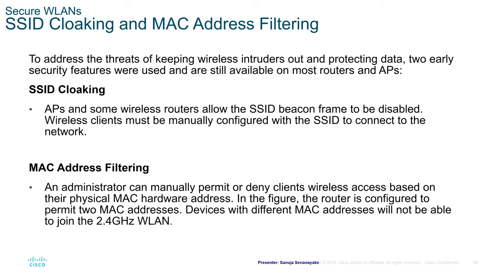According to a Cisco figure, the router is configured to permit two MAC addresses, and devices with different MAC addresses cannot join the WLAN. For example, if you have a small office wireless network where only specific devices like a wireless printer need to connect to an access point, MAC address filtering provides much more security than SSID cloaking.